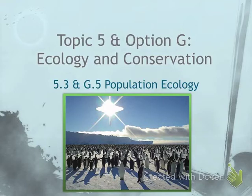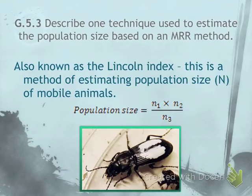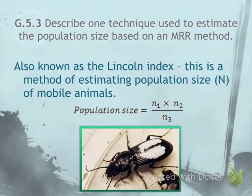This is referring to the mark-release recapture lab that we discussed earlier. Just a quick reminder: mark-release recapture, or the Lincoln Index, is a method for estimating the population size, especially of mobile animals. It's really difficult to actually count the population of any organism, but especially mobile animals, and so we use this equation to estimate population size.